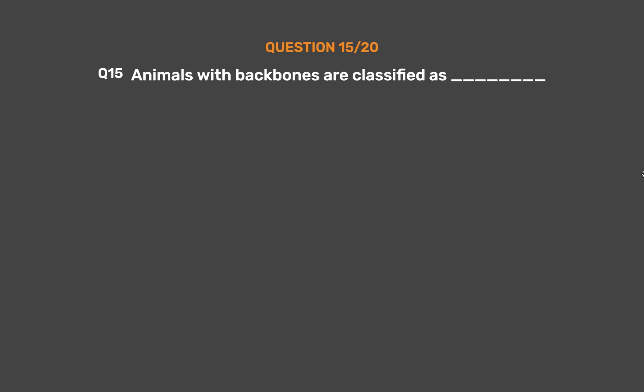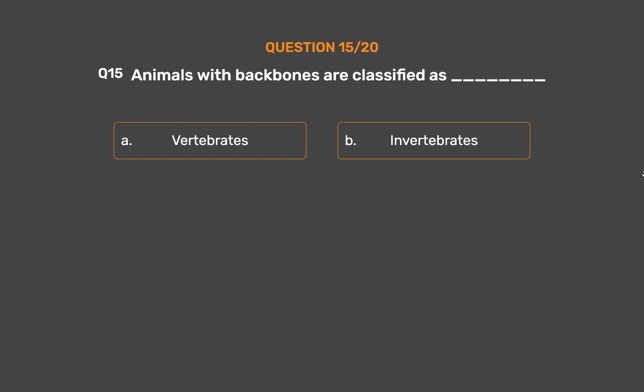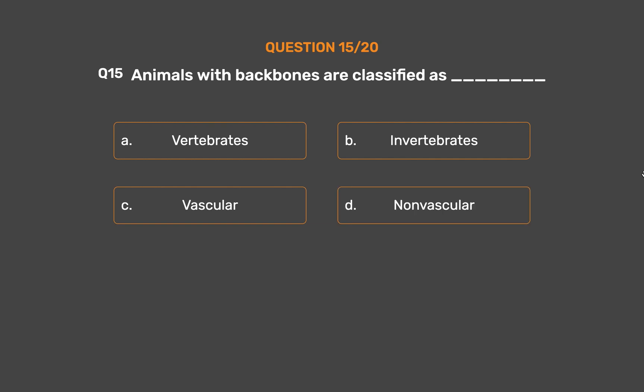Question number 15. Animals with backbones are classified as blank. Option A: Vertebrates. Option B: Invertebrates. Option C: Vascular. Option D: Non-vascular.